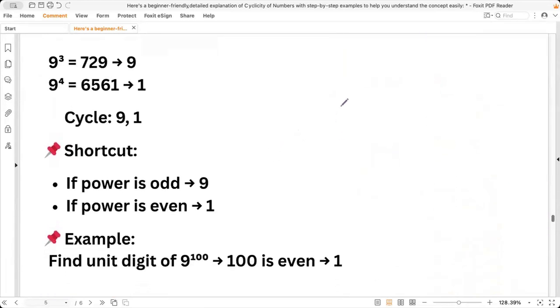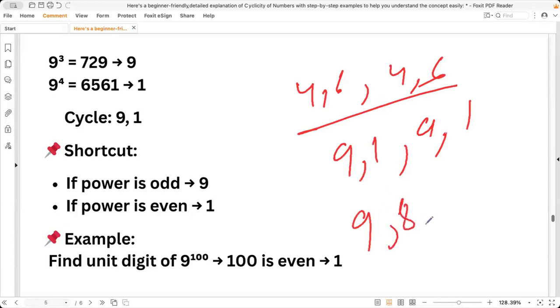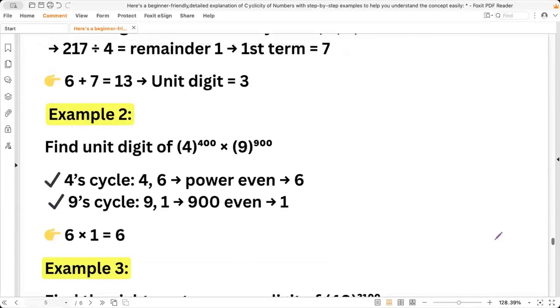Nine is similar to four. So four had a pattern of four, six, four, six. Nine has a pattern of nine, one, nine, one. How? 9^1 itself will be nine, square will be 81, cube will be 729. And when you multiply it by nine, you will get 6561. So it will repeat nine, one, nine, one.